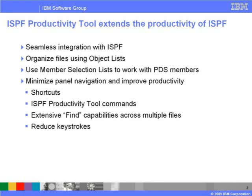ISPF Productivity Tool can perform most any activity within ISPF or internally invoke the function that can perform the task. Productivity improvements are realized by providing over 50 global commands and a very fast, extensive find capabilities within files or a list of files. In addition, nagging problems with PDS files, such as insufficient space or directory blocks, are easily corrected with minimal keystrokes compared to ISPF.